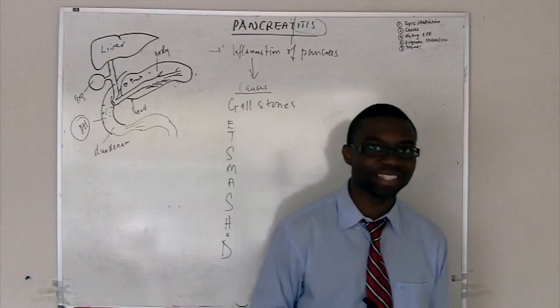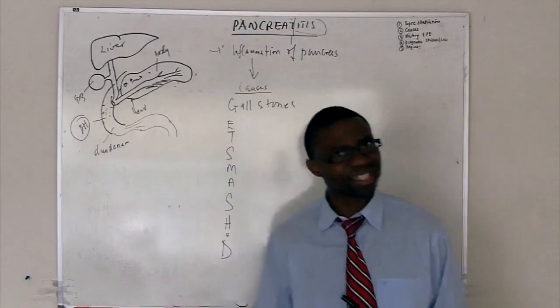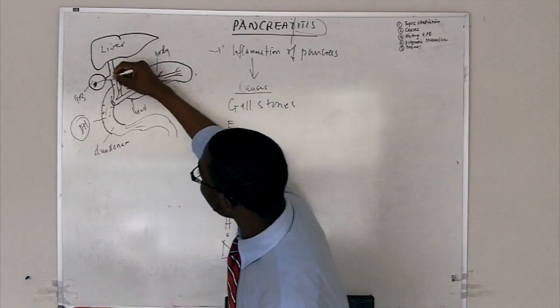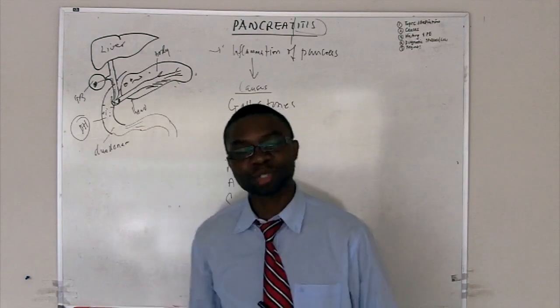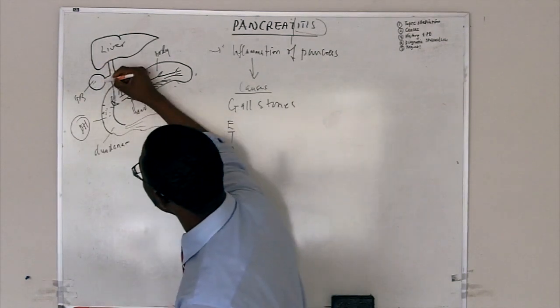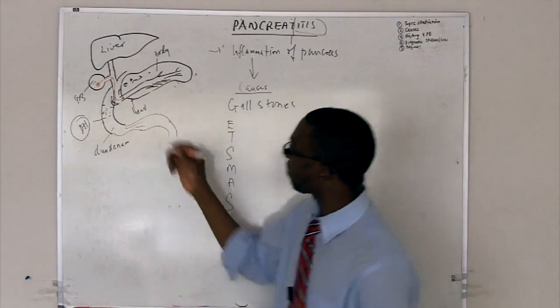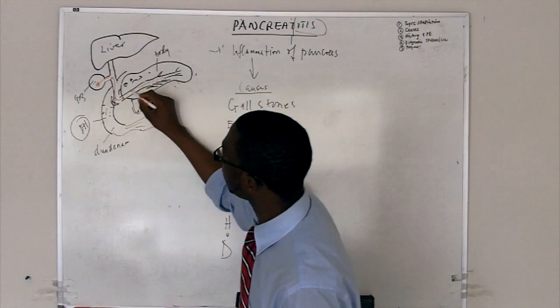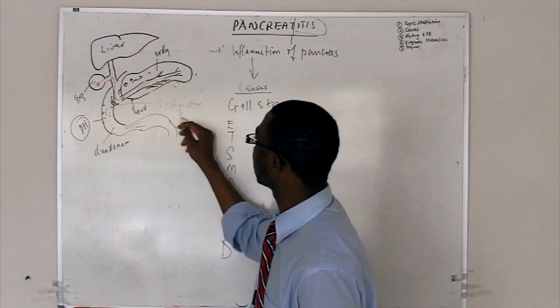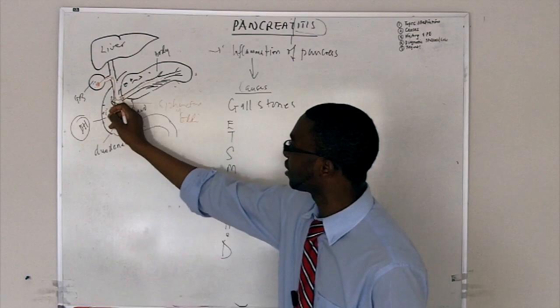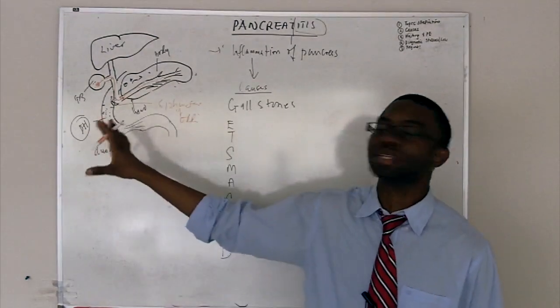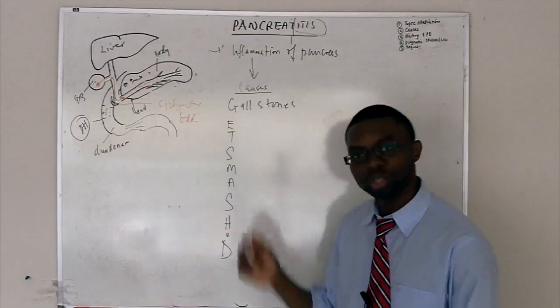That's why you go back to the biliary colic chapter we made. The same stone that came and obstructed the cystic duct is gonna get a chance to take a ride and go here and obstruct. Let's follow this stone. This same bad boy is gonna go from here and come and obstruct. Here's the nice pancreas trying to secrete all its juices to come out and bam! The stone is standing in front of the door, right on the sphincter of Oddi. Everything gets backed up. Gallstones! You gotta know that cold!